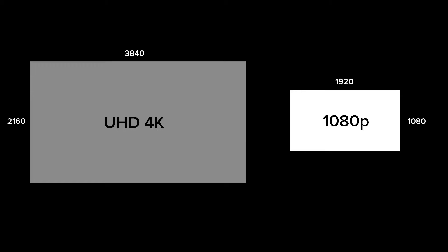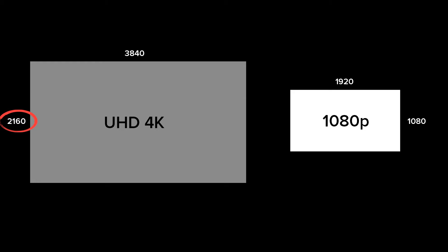4K basically stands for 4,000 pixels — but it's measured horizontally. That's a shift from how we used to measure things: with 1080p, we measured pixels vertically. The resolution of 1080p is 1920 pixels horizontally and 1080 pixels vertically. So we've switched from measuring vertically to measuring horizontally. Because of that, you'll sometimes hear 4K referred to as 2160p — that's simply referring to its vertical pixel count. So 4K is the same thing as 2160p.